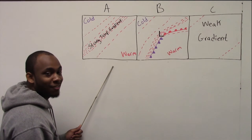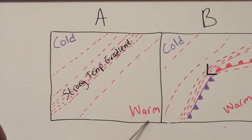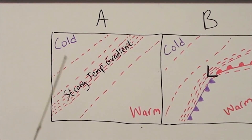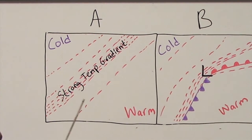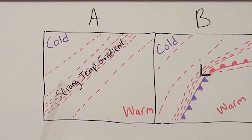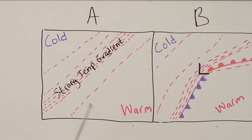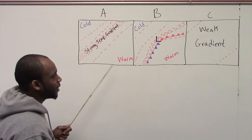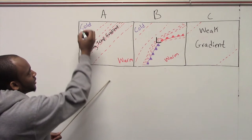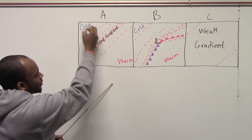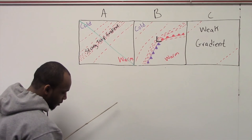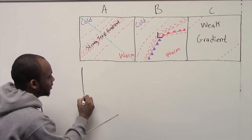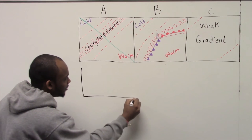Here we have panel A. We have warm temperatures on this side and cold temperatures on this side, showing a strong temperature gradient because you have tightly packed isotherms. This means a high level of baroclinicity. We are going to take a cross section through this area right here and draw a new panel to show something else.